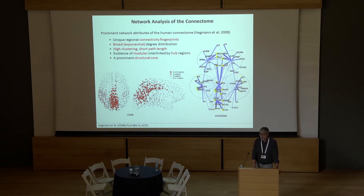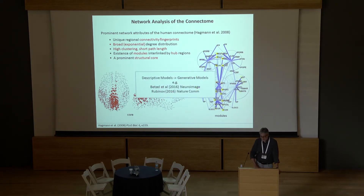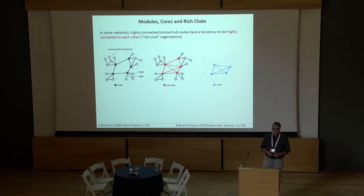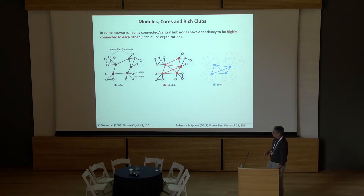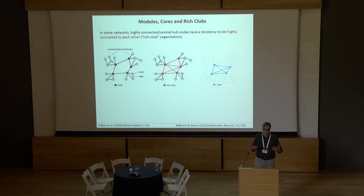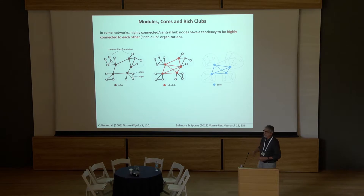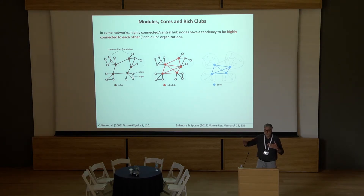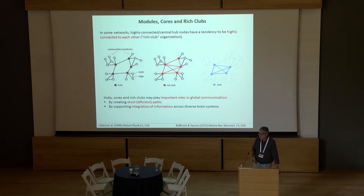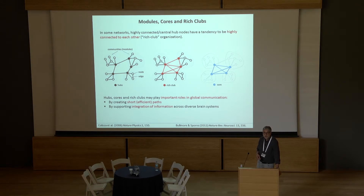Why do we care so much about the rich club? It's a perfect structural substrate for integrating information in the brain. In a network with four modules that are internally dense and externally sparse, hub nodes are critical for communication between modules. When hubs are directly interconnected, they can collect information from local communities and share it with each other quickly with few intermediate steps. This is a potential substrate for information integration, which many believe is important for brain function globally — perhaps even for consciousness.